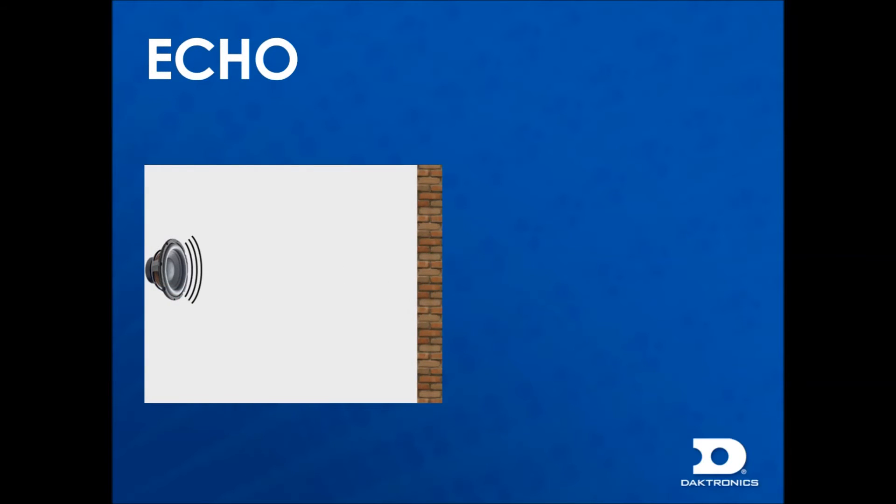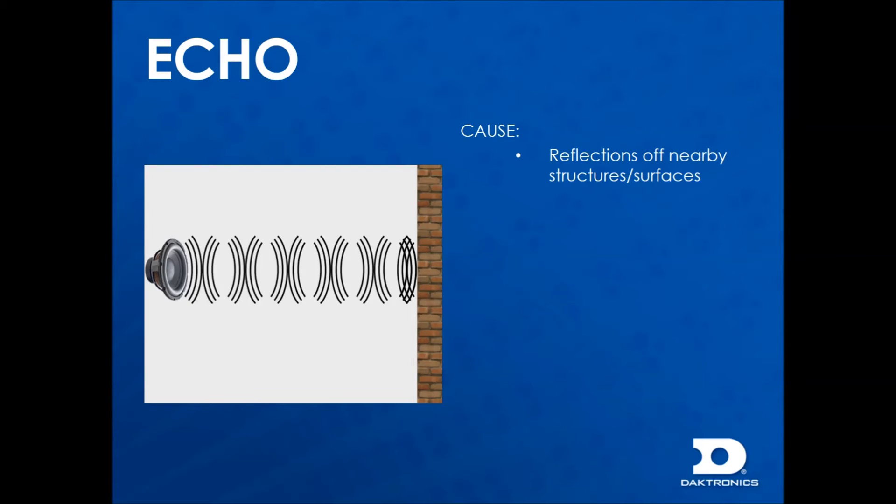A difficult problem to solve is echo. Echo is caused by reflections off nearby structures or surfaces. This is a test track to simulate audio issues such as echoes and feedback.